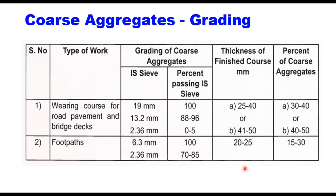Mastic is laid in one layer only, but thickness can vary from 20 mm to 50 mm. Grading of coarse aggregate to be used in mastic depends upon the layer thickness. When laid as a wearing course for road pavement and bridge decks, its thickness can be 25 to 40 mm or up to 50 mm. The requirement of aggregate grading is the same in both cases. However, the percentage of coarse aggregate will change with the thickness of the finished course.